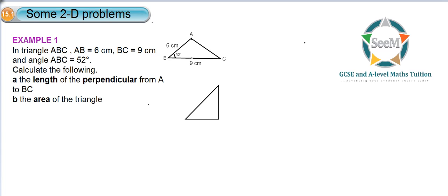So that's the length of perpendicular line from A to BC, so that's this line here. And then the second question states that after we calculate that, we should calculate the area of the triangle.